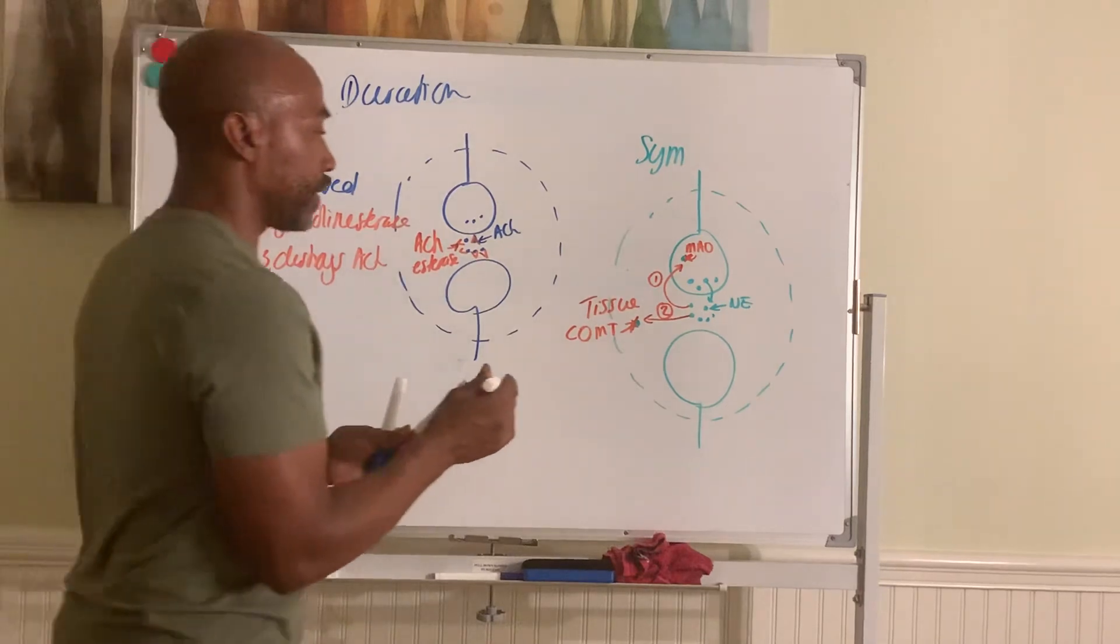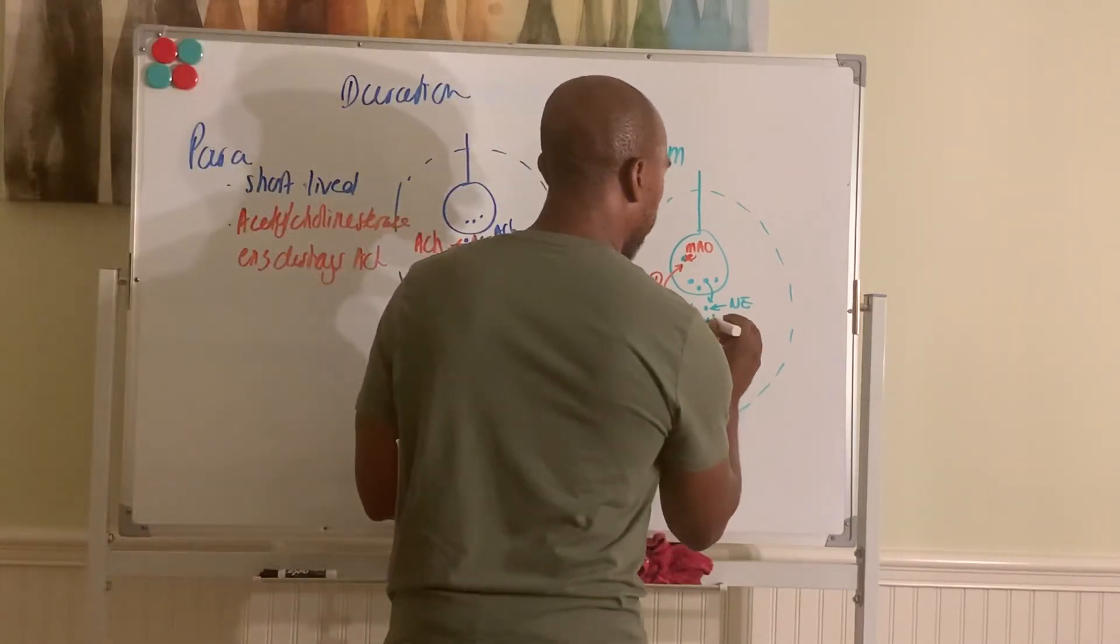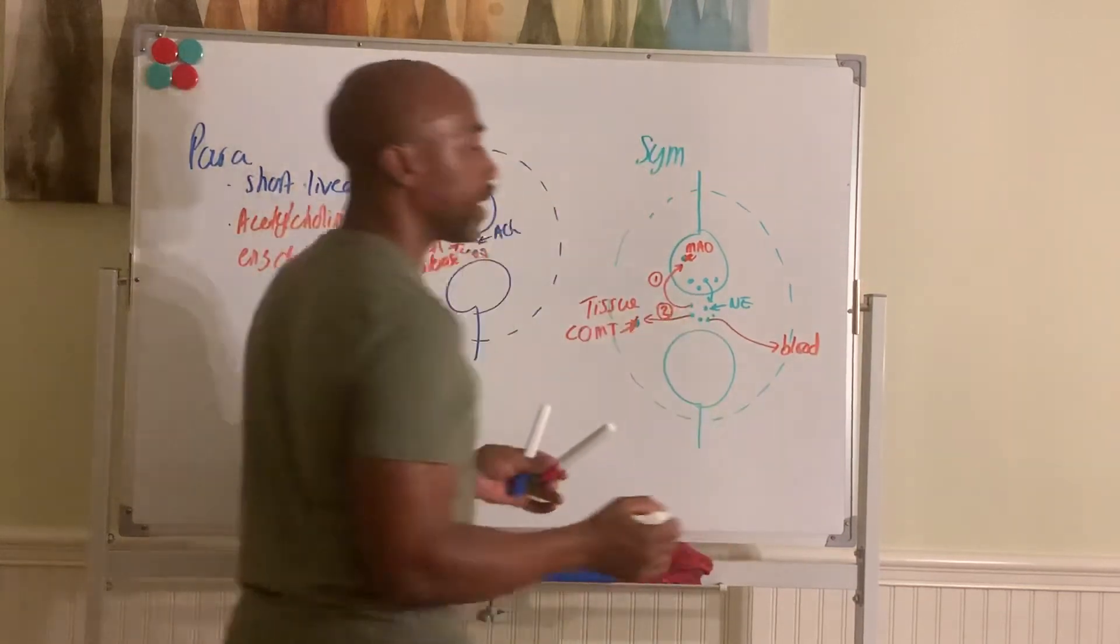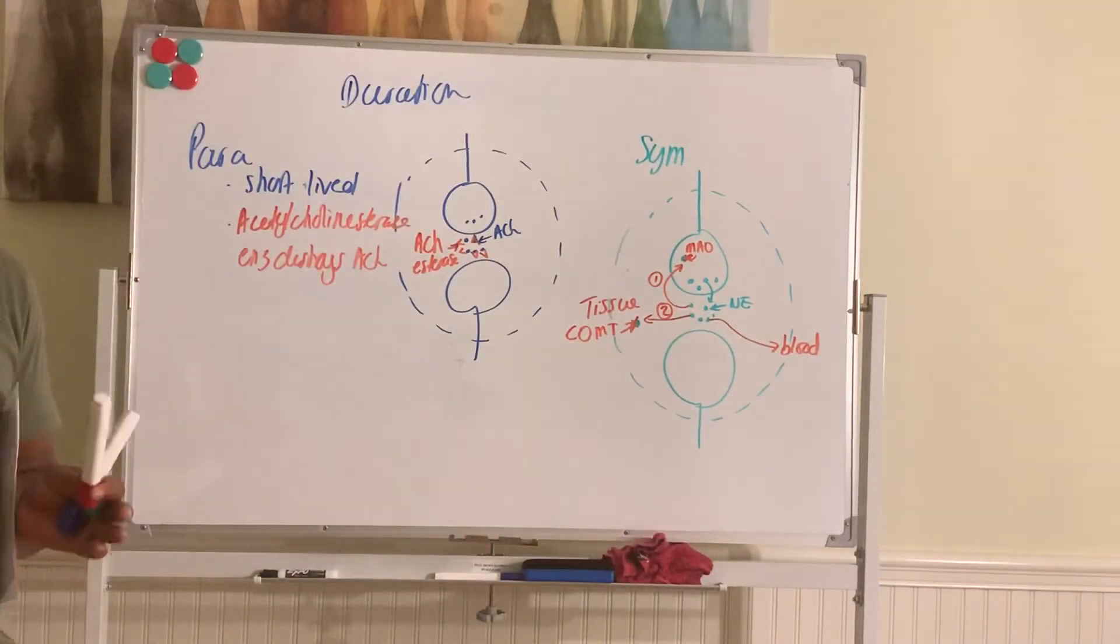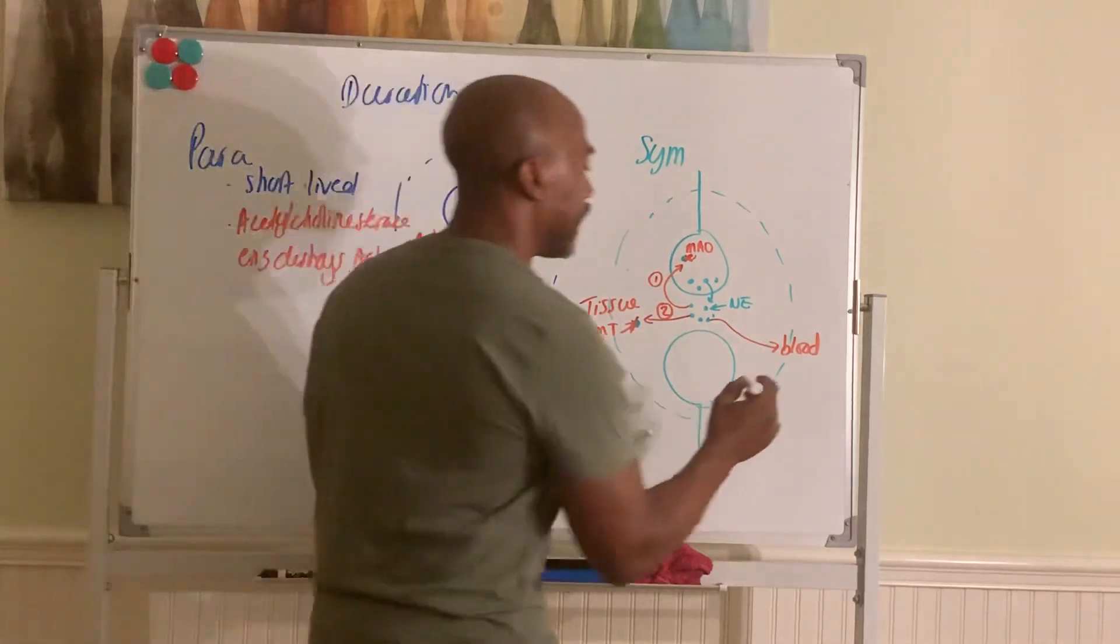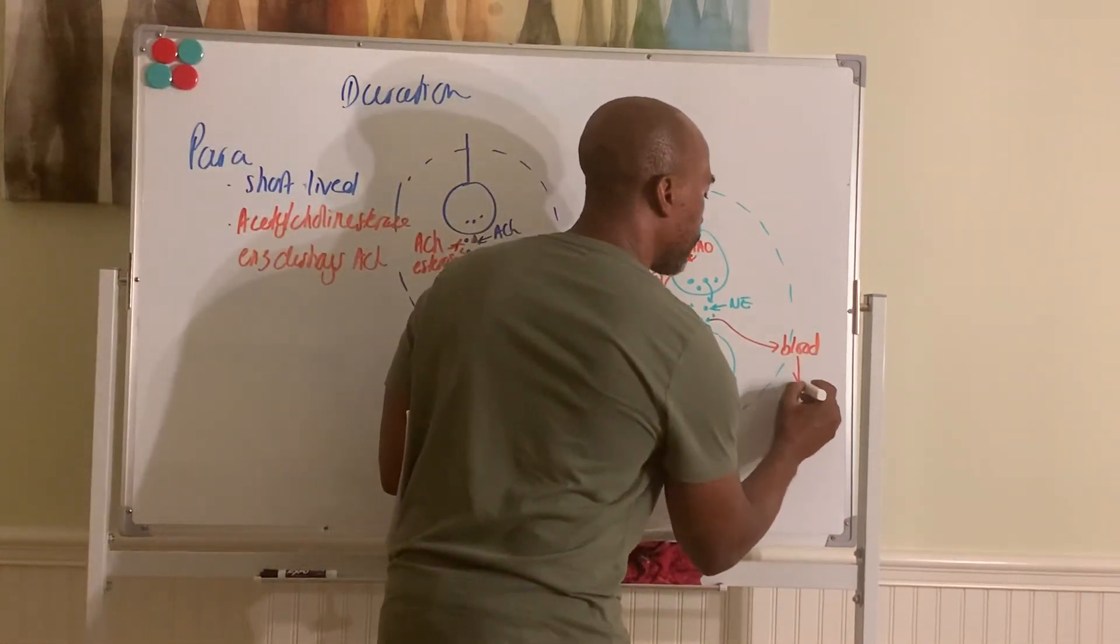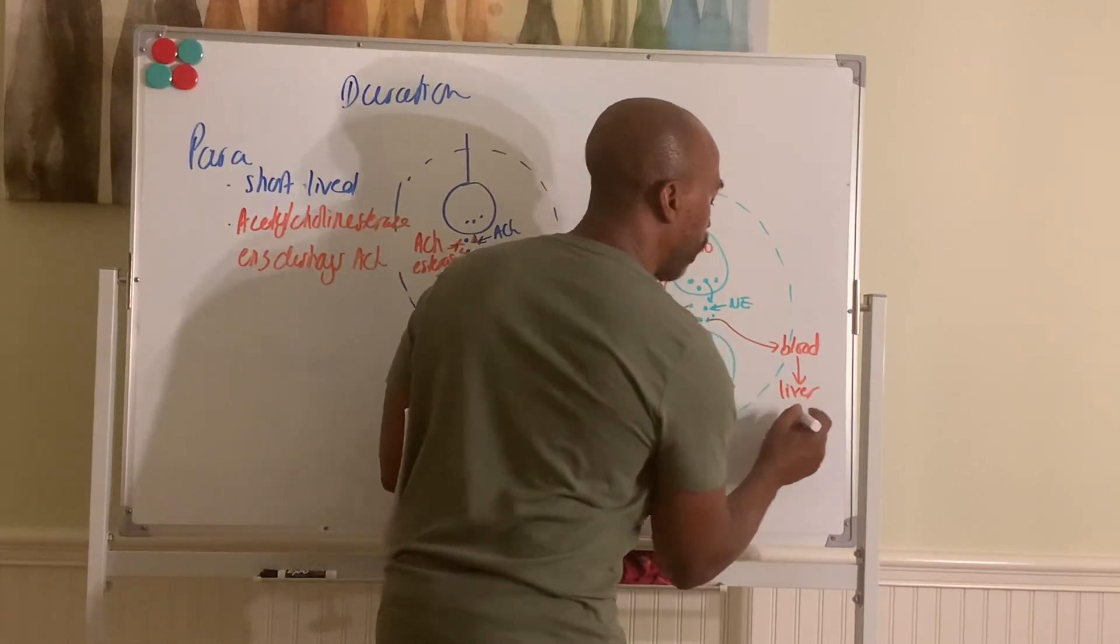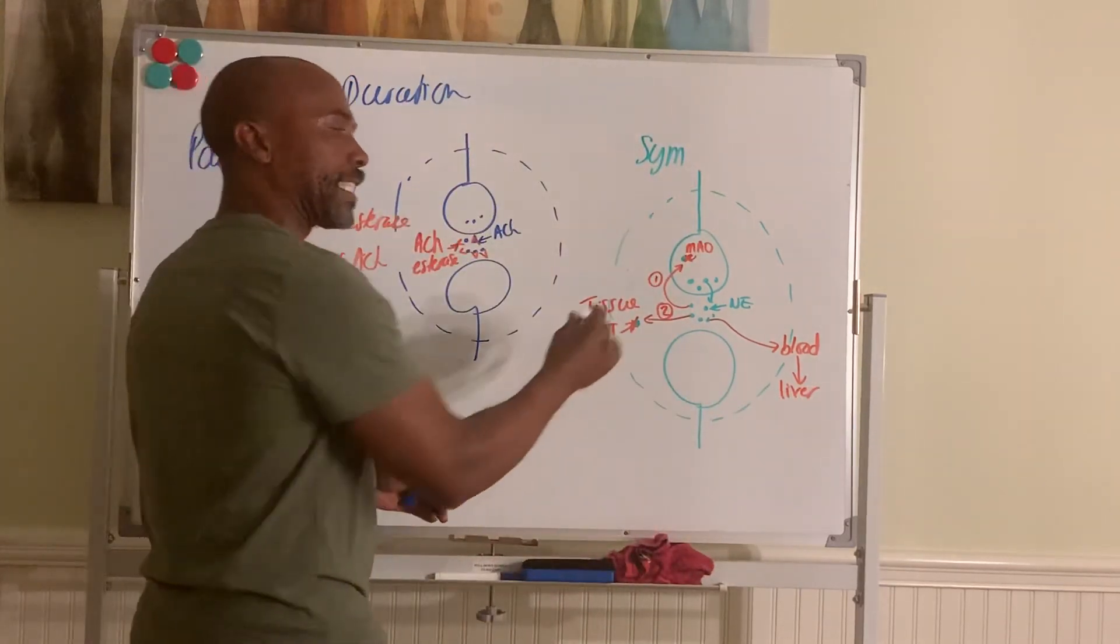Or third option is that most of it actually leave the cleft and go into the blood. And in the blood you don't have COMT or MAO. And so eventually the blood is passed to the liver where the enzyme in the liver will destroy it for you. But that takes time.